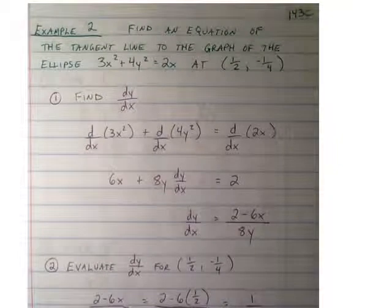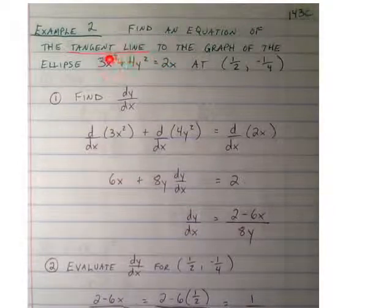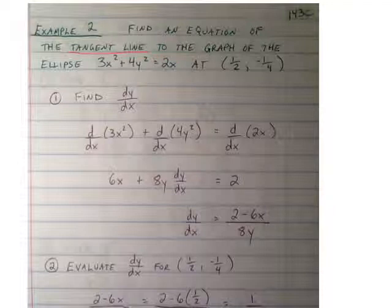Find the equation of the tangent line to the graph of the ellipse, 3x squared plus 4y squared equals 2x, at 1/2 comma negative 1/4. And if we're going to be finding the tangent line equation, the first thing we need to do is find the slope of the tangent line. And we can find the slope of the tangent line by taking the derivative of the implicitly defined function.